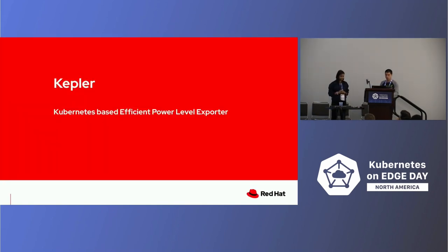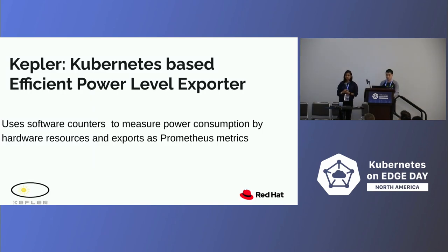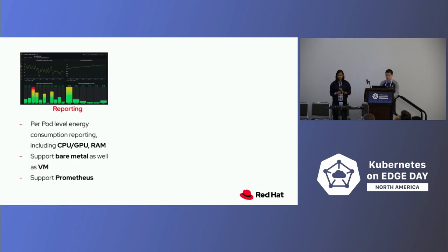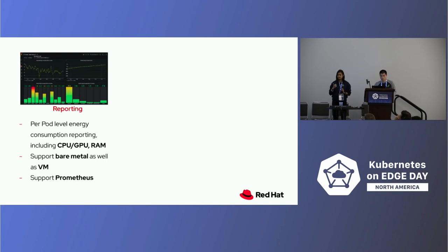Our first project is the Kubernetes-based Efficient Power Level Exporter — Kepler. Kepler uses software counters to measure power consumption by hardware sources and exports them as Prometheus metrics. It reports per-pod energy consumption from resources like CPU, GPU, and RAM, supports bare metal as well as VMs, and uses a cloud-native stack with Prometheus and Grafana to render an energy consumption dashboard.